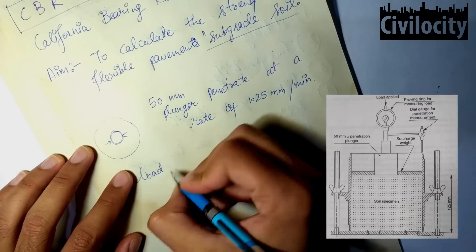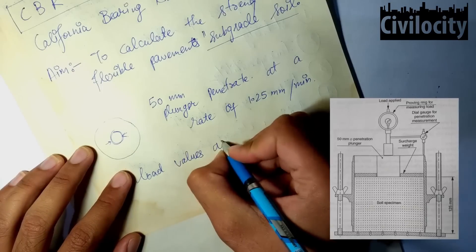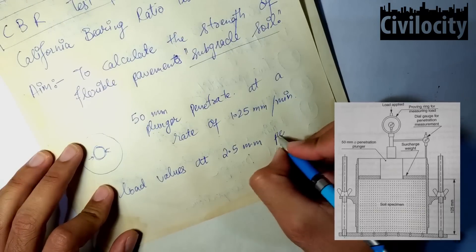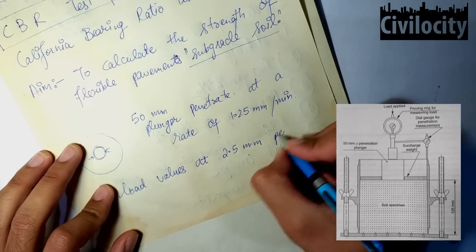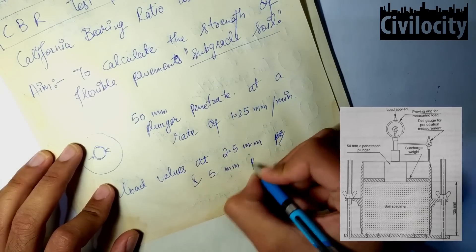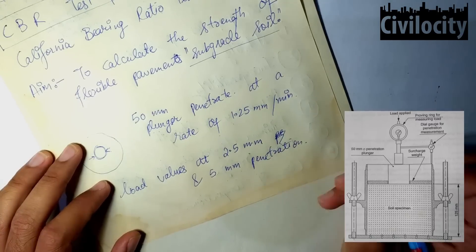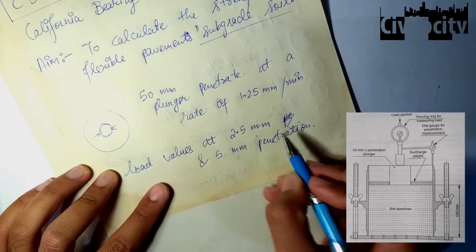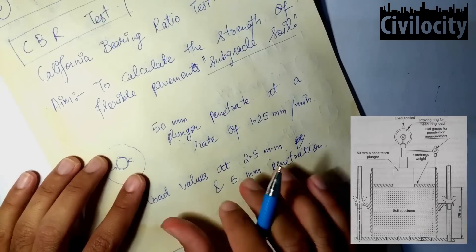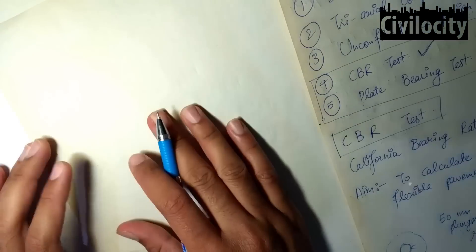We have to measure the penetration values for each particular load value. On further increasing the load, we need to find out the load values at 2.5 mm penetration and 5 mm penetration. This means we need to find how much load is required to cause a penetration of 2.5 mm and 5 mm into the soil specimen.